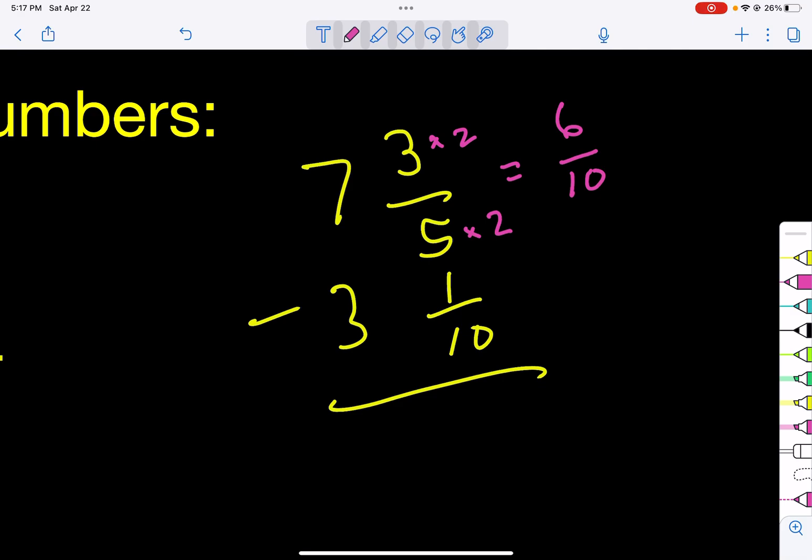So let's go ahead and do that. So how do you subtract? Well, the whole numbers you just subtract. 7 minus 3 is 4. Next, we can subtract these. So 6 minus 1 is 5. Now you're to the right answer. That is correct.